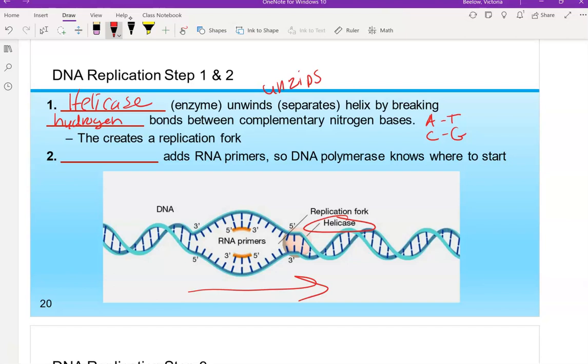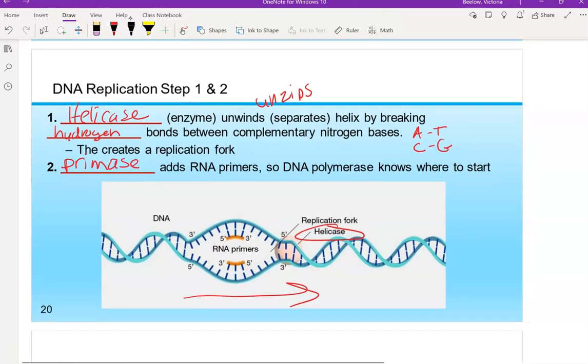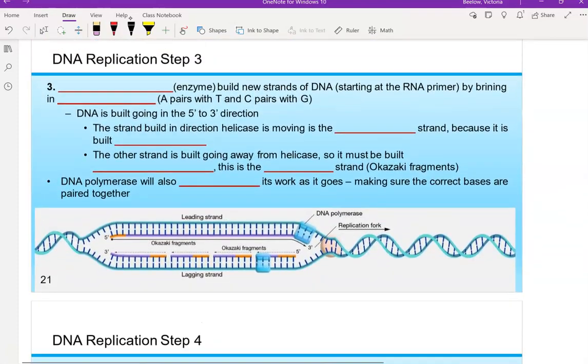Now, once it opens up, it creates a replication fork, like literally a fork. So that's what it's called. Sometimes this is also called the origin as well, because that's where replication is going to be taking place. Now, to know where to start replication, we use an enzyme called primase. So this is a general group of enzymes. And it's going to add RNA primers. You can see that in the diagram here, the little orange guys. This is so DNA polymerase, which is the next enzyme we're going to talk about, this is how it knows where to start the DNA replication process. So helicase has opened up our DNA strand to create the replication fork. And then the enzyme primase will add these RNA primers, which is where replication will begin.